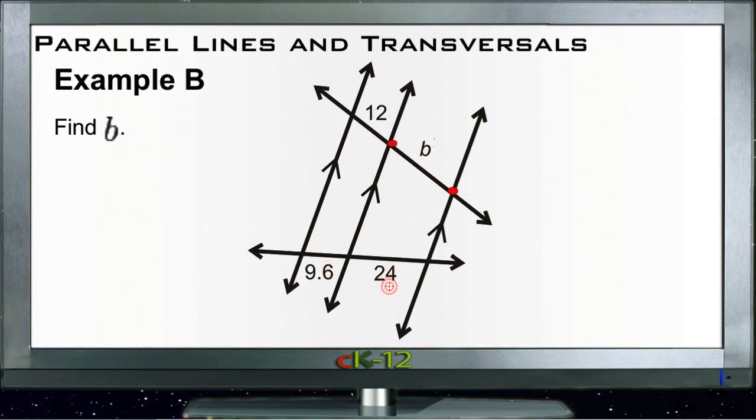So we can say that 12 compares to 9.6 the way b compares to 24. We'll do our ratio the other way this time. So 12 compares to 9.6, a little weird to use a decimal in a fraction, that doesn't hurt anything, the way that b compares to 24.